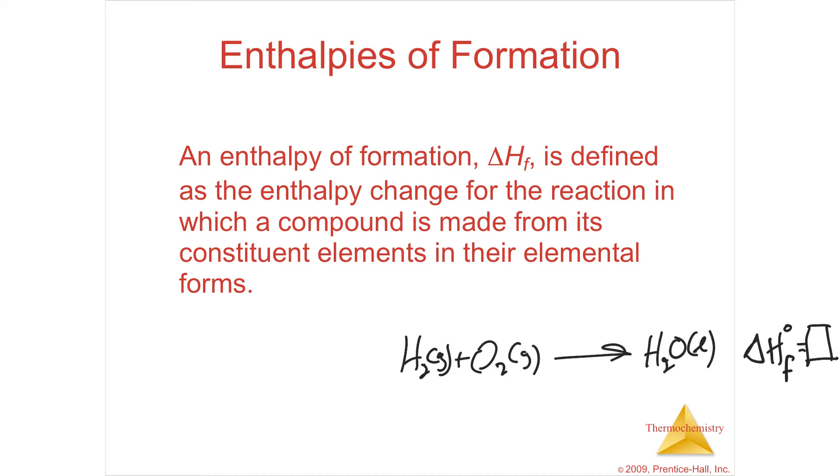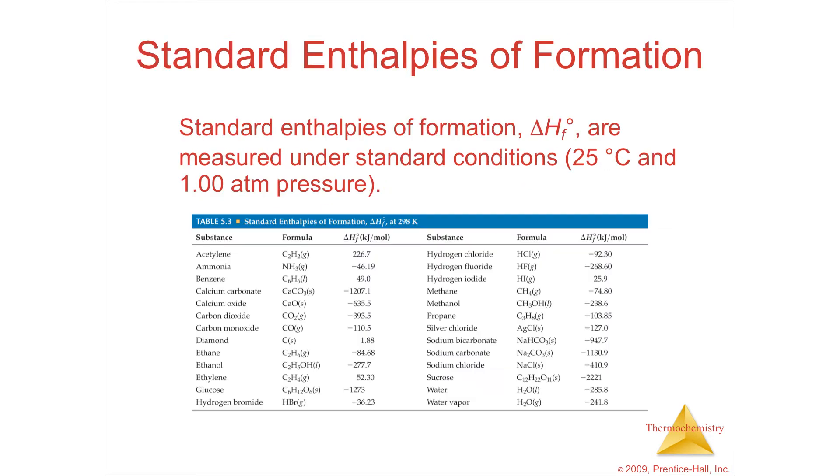It's like making it yourself. It's kind of like a kit. You just use all the heats of formations to make whatever you're looking for. So this is an example. You see that it's room temperature, 25 Celsius. It's one atmosphere, so it's the amount what you would have in the lab. And there are books full of these, of every possible stuff that you can make, and it tells you how much energy is either consumed or released to make this stuff from its elements.